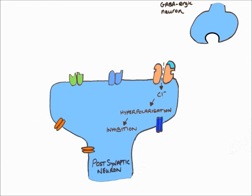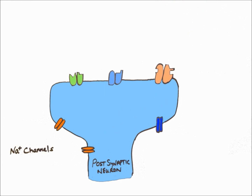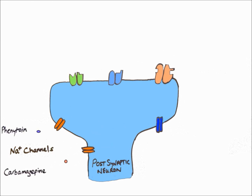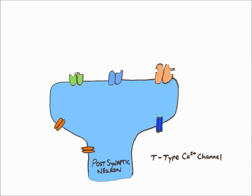The post-synaptic neuron also has sodium channels present. When sodium channels are open, sodium ions move into the post-synaptic neuron causing depolarization and excitation, which can lead to proliferation of action potentials from an epileptic focus. Phenytoin and carbamazepine block these sodium channels, stopping sodium from entering and reducing the likelihood of epileptic focus action potential propagation, thereby reducing the risk of seizures.